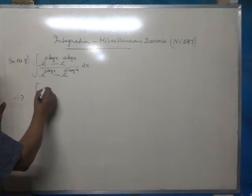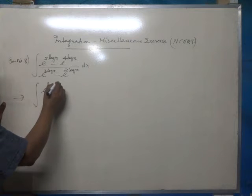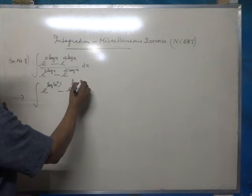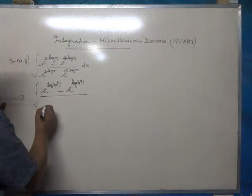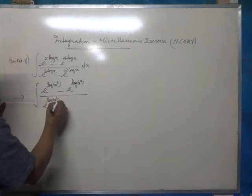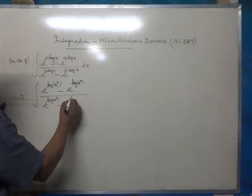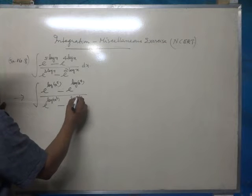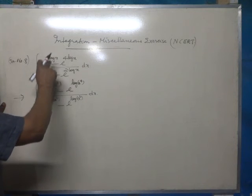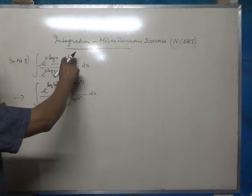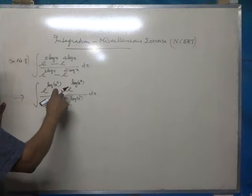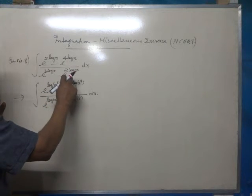Integral e raised to log x raised to 5 minus e raised to log x raised to 4 by e raised to log x cubed minus e raised to log x squared dx. 5 log x means log x raised to 5. 4 log x is log x raised to 4. Similarly, 3 log x is log x cubed and 2 log x is log x squared.